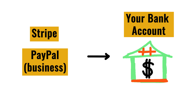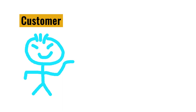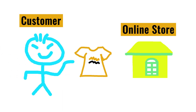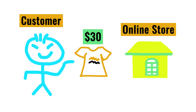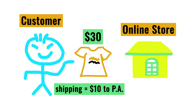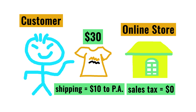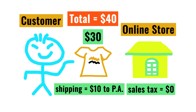But first, you need to set up an account with either Stripe or PayPal before you could connect either one of them to your WooCommerce store. Then, here comes a customer — he wants to buy a t-shirt from your online store which costs about $30. He bought it, and the shipping cost is about $10. He doesn't have to pay sales tax because he lives in Pennsylvania and they don't charge sales tax when you buy clothes. The total cost is $40.